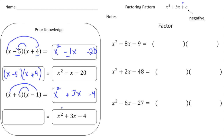Now this one down here — let's first draw our little factor parentheses. So it's going to be an x and an x. So now we have to say what times what gives us a negative 4, but adds up to 3. So that would be a plus 4, and then minus 1. Because 4 times negative 1 gives us the last term, but 4 plus negative 1 gives us the middle term.